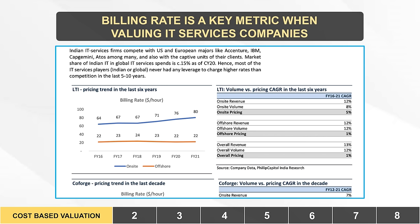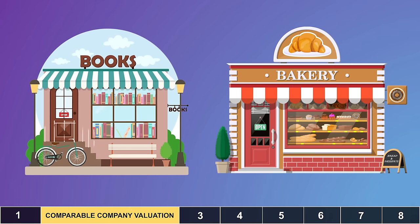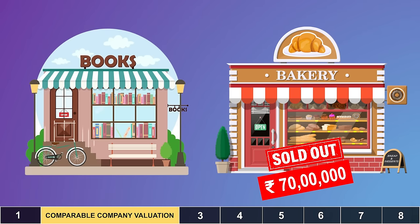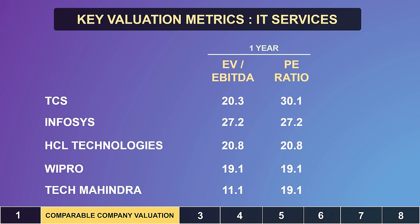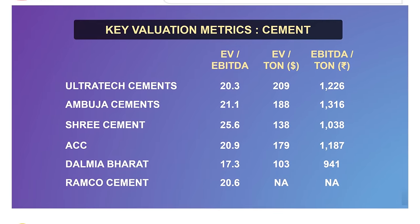A second valuation method, and a popular one, is to compare the price of a business with another one in similar settings. Say there is a shop just next door to the bookshop. Both properties are similar in terms of dimensions, frontage, facilities, etc. Now that shop was recently sold for 70 lakhs. Given this, it is highly unlikely that our bookshop owner would sell for just 50 lakhs — you'll likely have to fork 70 lakhs, and that's the comparable company valuation approach. This is very common in publicly listed companies; for example, large IT services companies tend to have comparable valuations. We see this trend in larger cement companies too, where enterprise value to EBITDA and metrics like EV per ton and EBITDA per ton are hugely comparable.